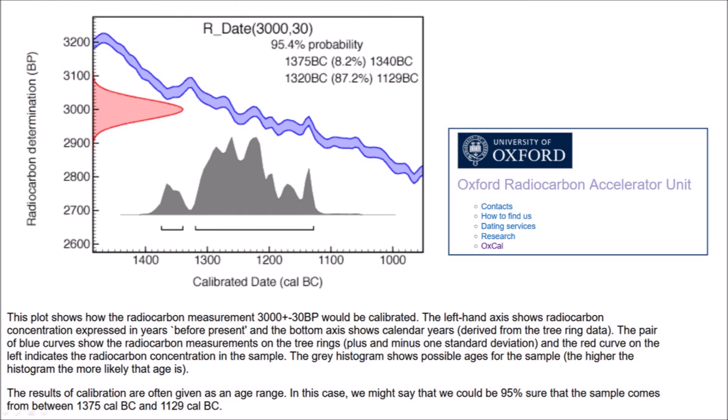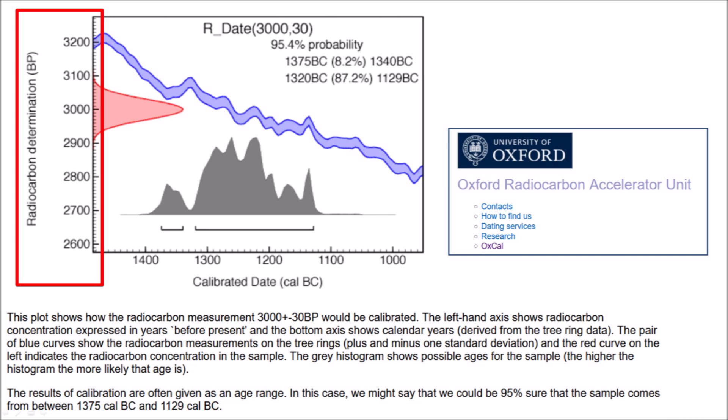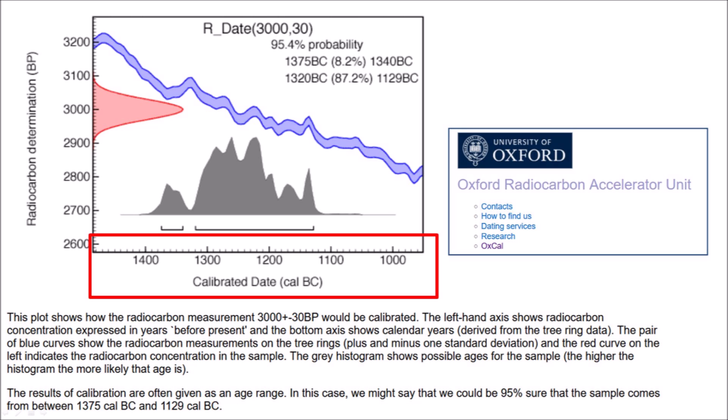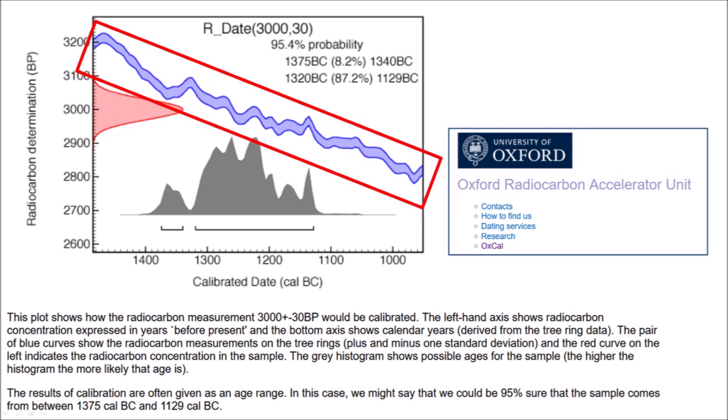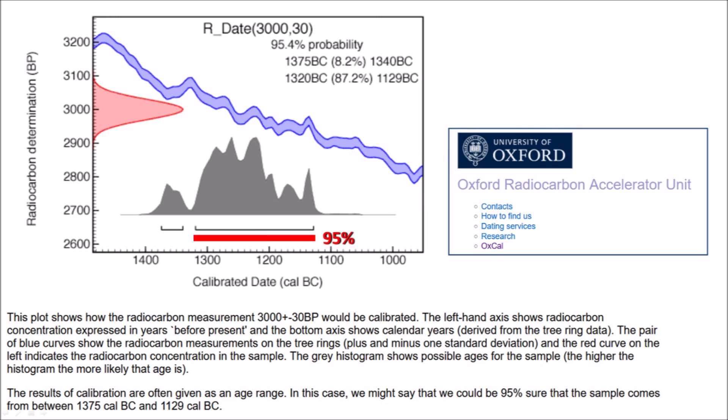This plot shows how the radiocarbon measurement 3,000 ± 30 BP would be calibrated. The vertical axis shows radiocarbon concentration expressed in years before the present; the horizontal axis shows calendar years derived from tree ring data. The pair of blue curves show the radiocarbon measurements on the tree rings plus or minus one standard deviation. The red curve indicates the radiocarbon concentration in the sample, and the gray histogram shows possible ages — the higher the histogram, the more likely the age. We could be 95% sure the sample comes from between 1375 BC and 1129 BC.